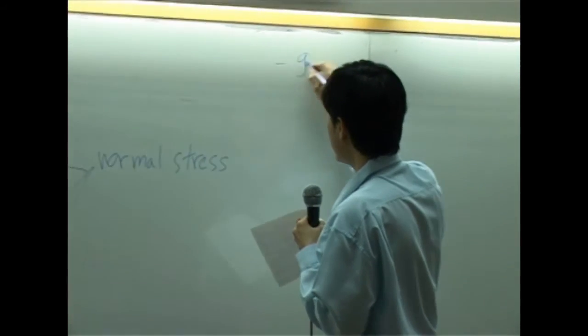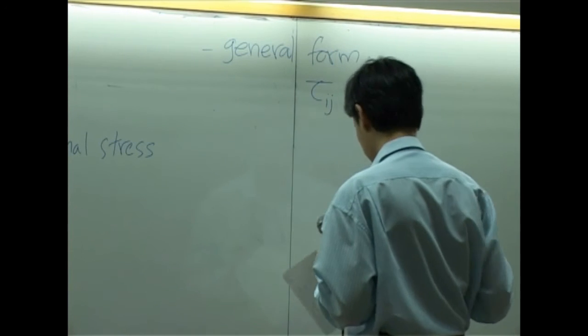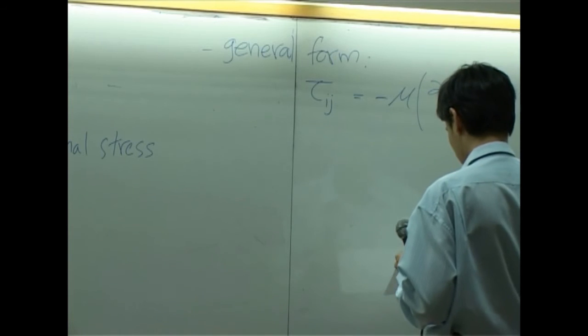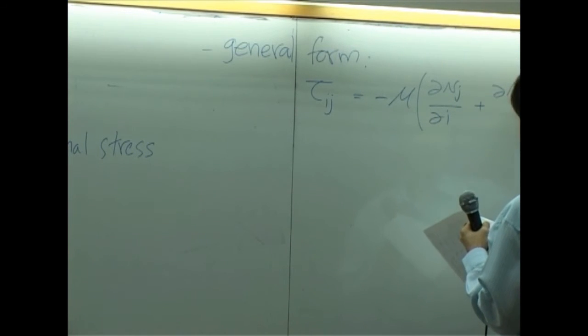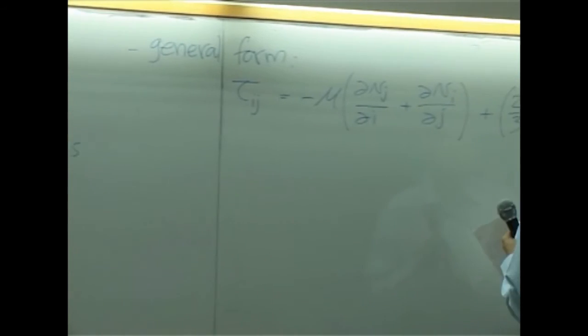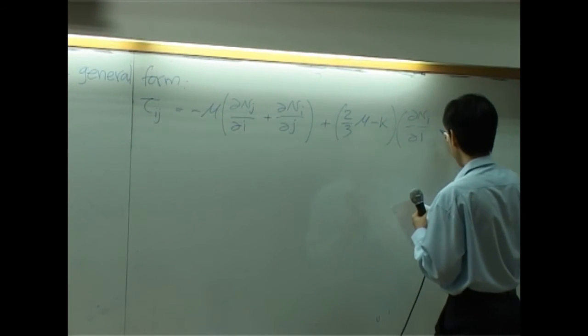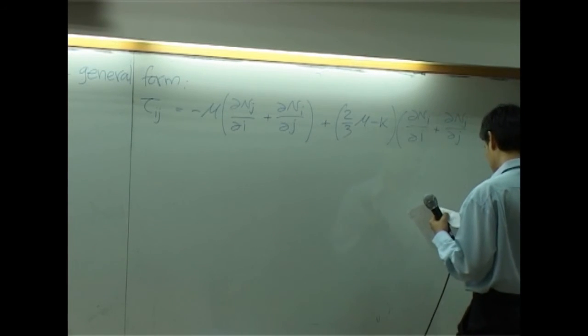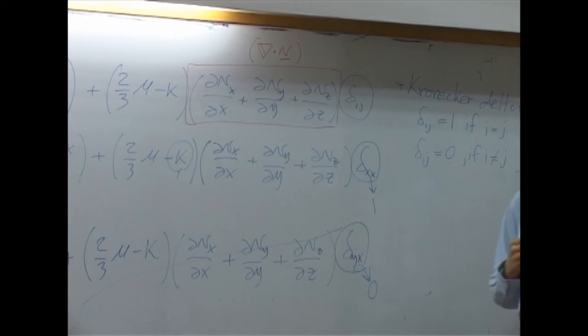So as a result, tau would have nine components. And these nine components, in general form, can be written like this. All right.